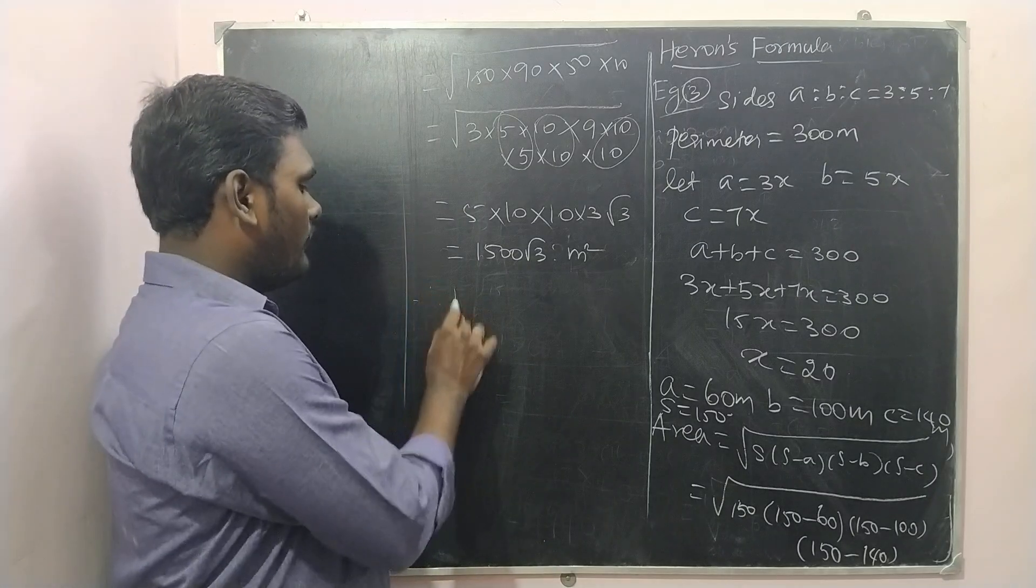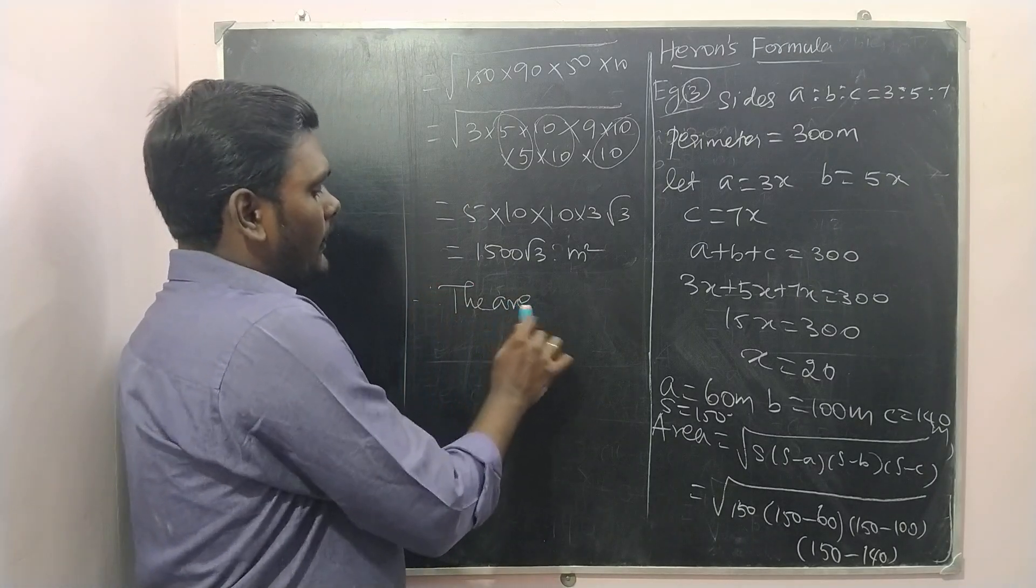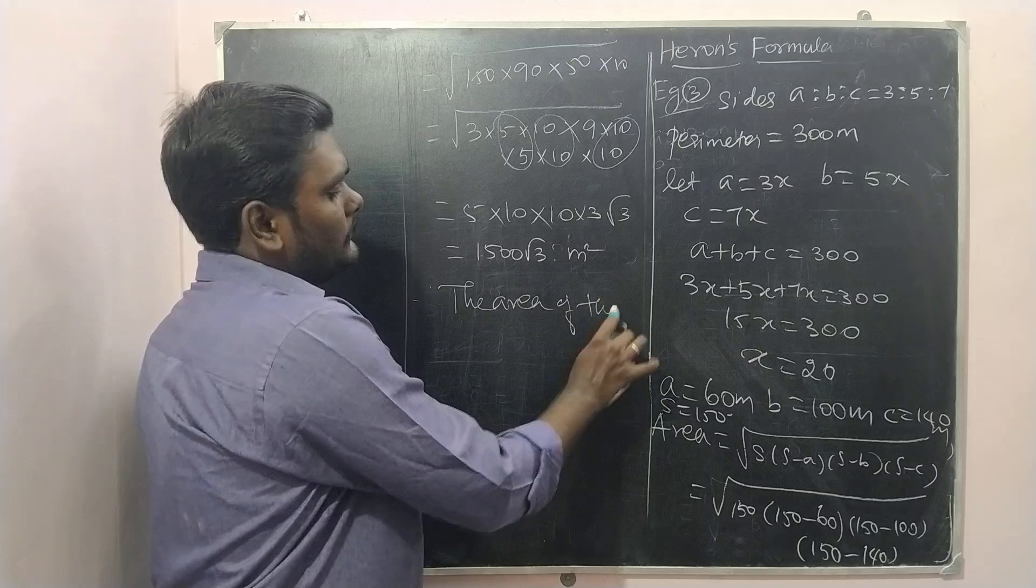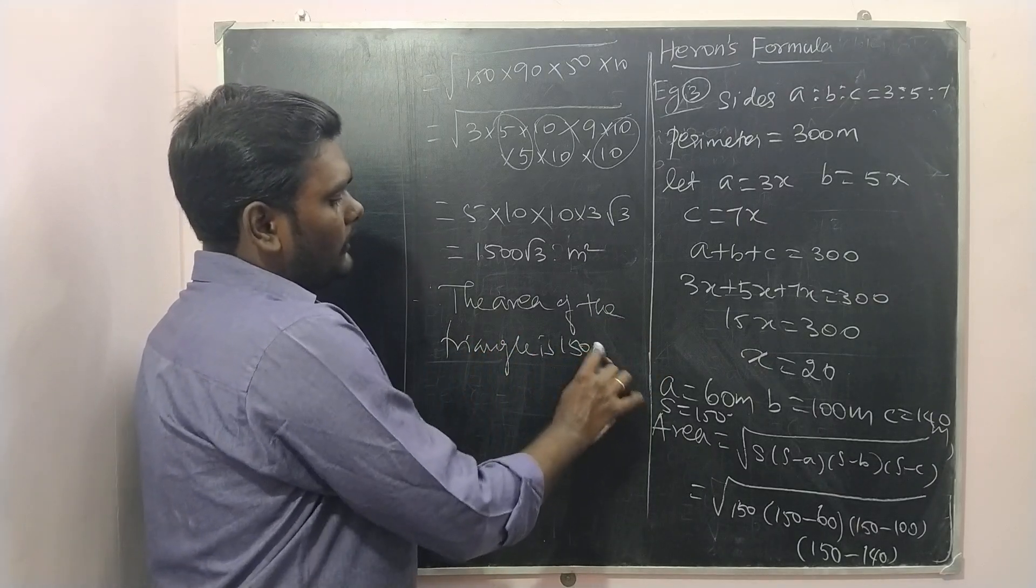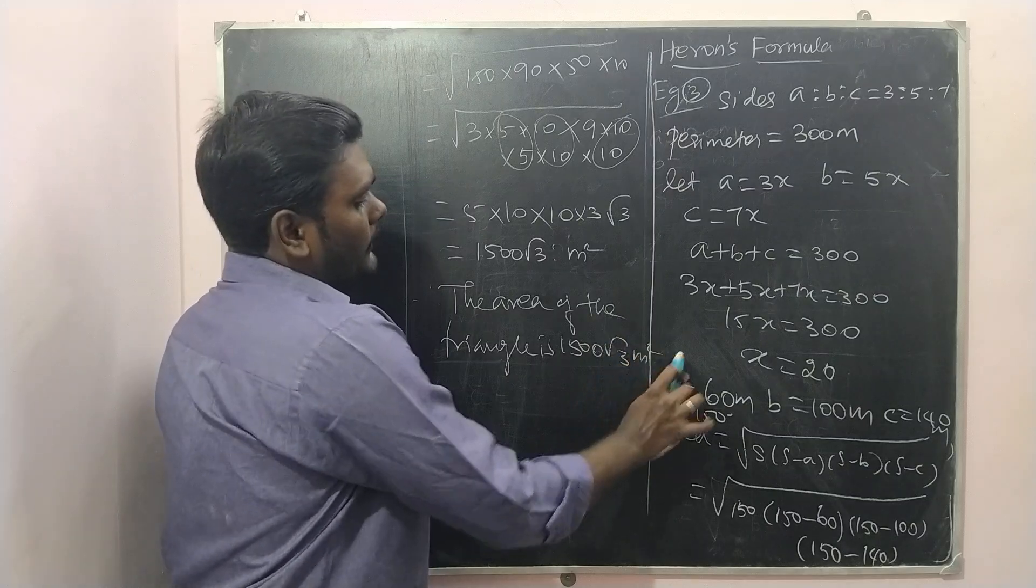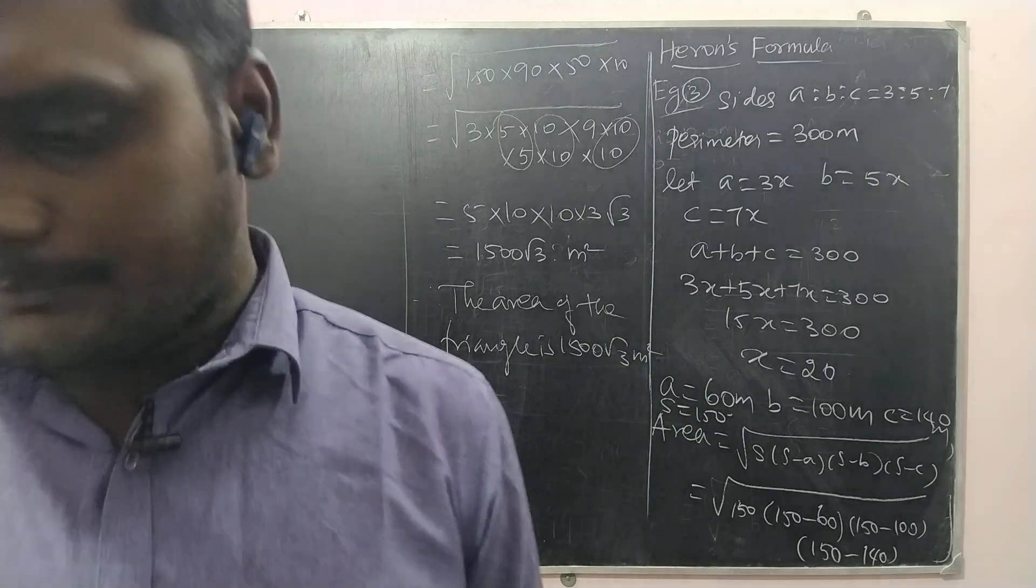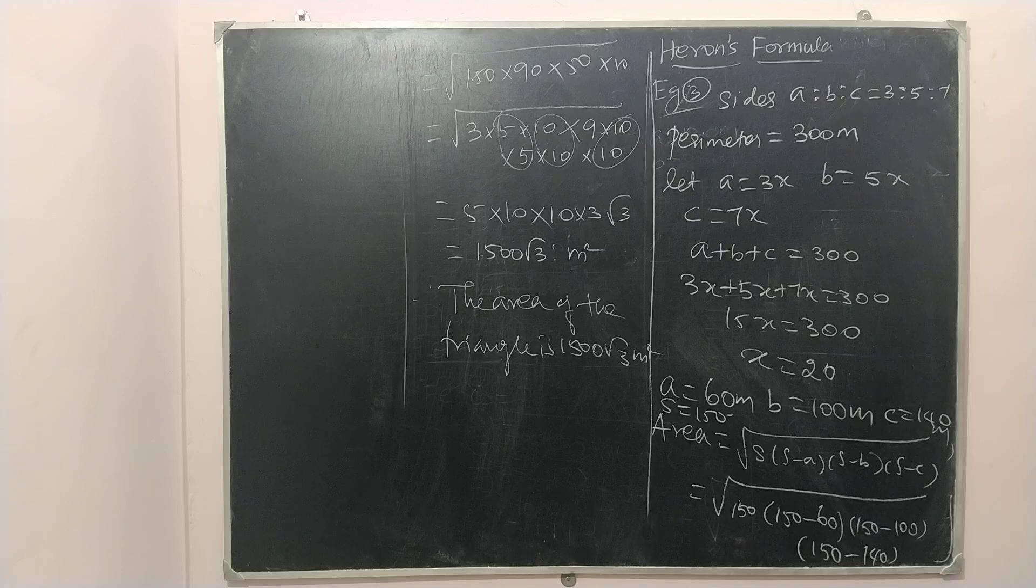So what would be the therefore statement? Therefore, the area of the triangle is 1500 root 3 meter square. So any doubts?